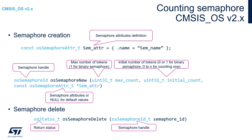We can create a semaphore using the osSemaphoreNew function. This is the same function used for binary semaphore creation. It needs three arguments: the first is the maximum number of tokens — in the case of binary, it will be 1. The second is the initial number of ready tokens — for counting semaphores, it can be either the maximum value for guarding shared resources, or 0 for other usage. The third argument is a pointer to the attribute structure, or NULL to use default values.